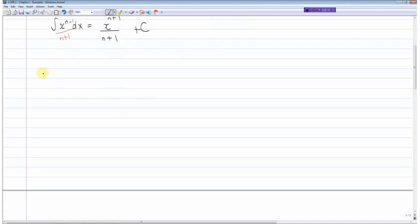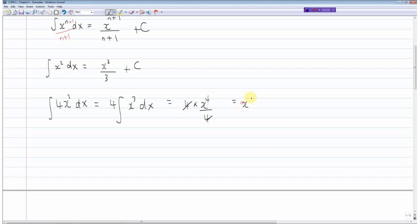Say for instance the first example we want to integrate x squared. By this rule here we would say x to the 2 plus 1 is 3, we divide the whole thing by the new power term which is 3, and we add a plus c. Say we want to integrate 4x cubed. Since 4 is a constant we can write this like this. So we're just integrating x cubed. This would be 4 multiplied by x to the 3 plus 1 is 4, and we divide by 4. These cancel so we're left with x to the power of 4 plus c.